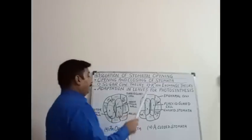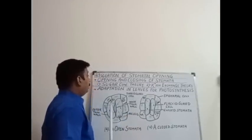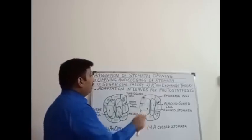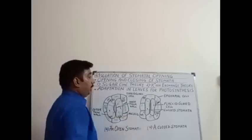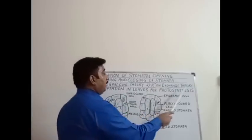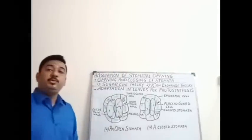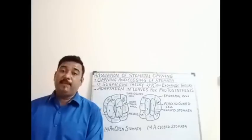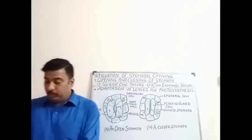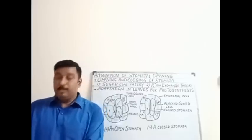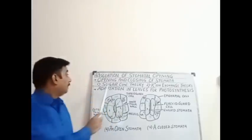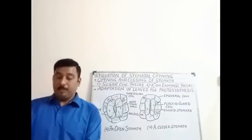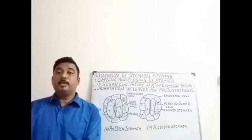Coming to the opening and closing of stomata, there are two theories which decide this: the sugar concentration theory and the potassium ion exchange theory. These were also explained in the last class but today we go into more detail. The first one is the sugar concentration theory.